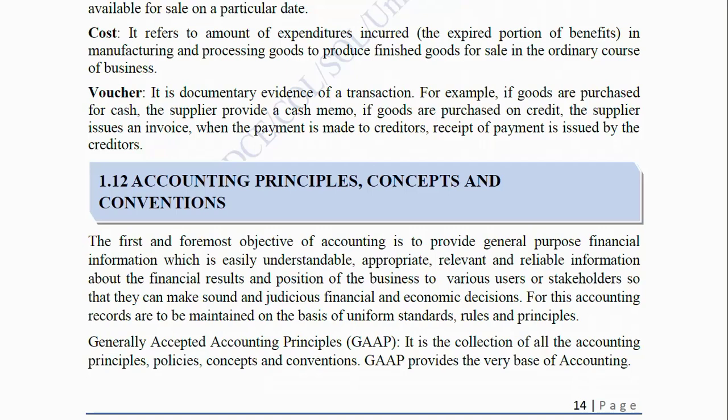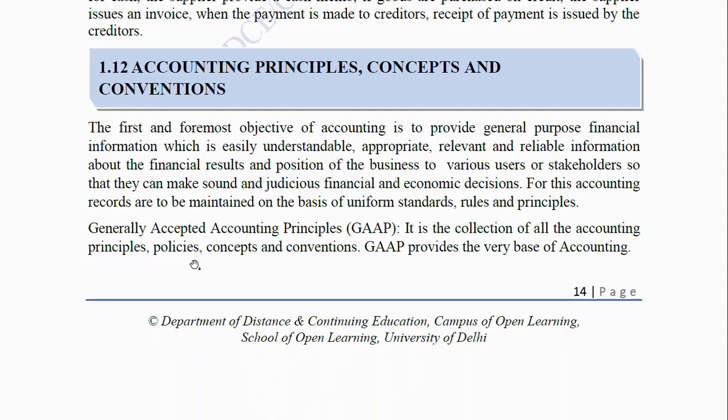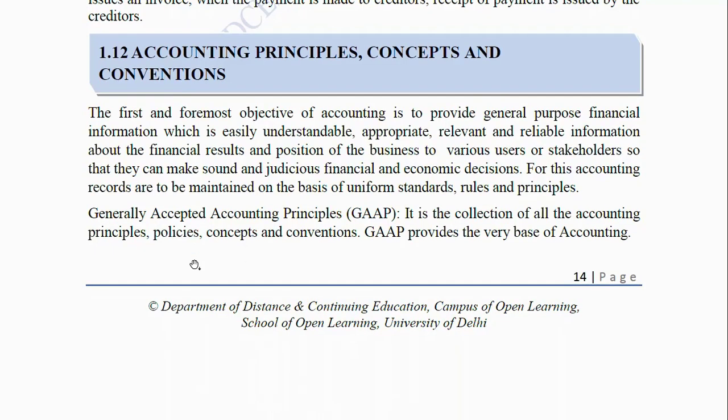Accounting Principles, Concepts and Conventions: The first and foremost objective of accounting is to provide general purpose financial information — understandable, appropriate, relevant and reliable — about the results and position of the business to various users or stakeholders so that they can make sound financial and economic decisions. For this, accounting records are to be maintained on the basis of uniform standards, rules and principles. Generally Accepted Accounting Principles (GAAP): It is the collection of all the accounting principles, policies, concepts and conventions. GAAP provides the base of accounting.